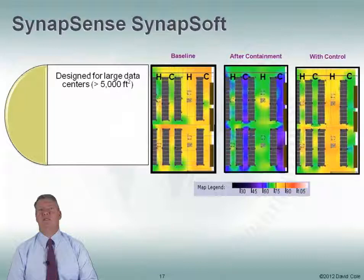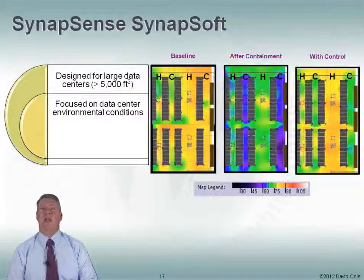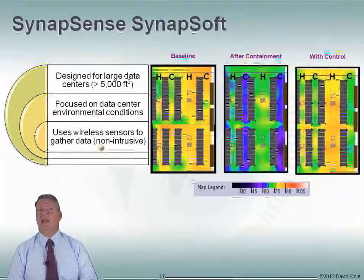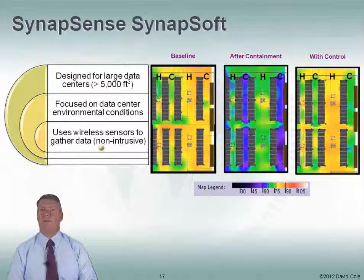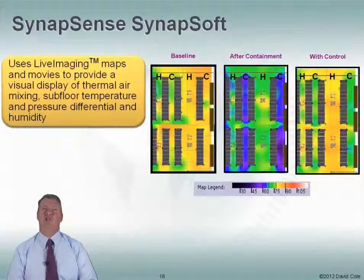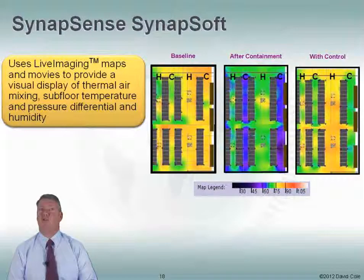Synapsense is not specifically a data center management product — it's really designed to manage environmental conditions, specifically temperature. It's designed for large data centers, maybe greater than 5,000 square feet, and is really focused on data center environmental conditions. They use a lot of wireless sensors to gather data, so they're non-intrusive — you can pop these sensors wherever you want. It uses something called live imaging, which can map your temperature changes to movies. You can say, show me what my temperature looked like over the course of a day, month, or year, and see how temperatures change. It can also look at pressure differential, humidity, and whatever the sensors support.